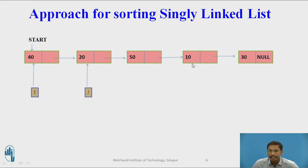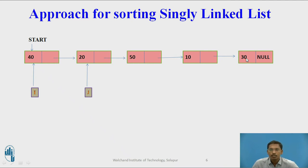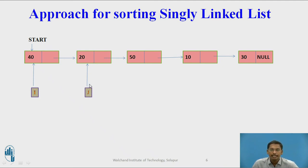This is an example. Suppose we have a singly linked list like this: 40 is the first node and start is pointing to node 40. 40's next pointer is pointing to node 20, 20's next pointer is pointing to node 50, 50's next pointer is pointing to node 10, 10's next pointer is pointing to node 30. 30 is the last node, so its next pointer stores null. I am using two pointers i and j for traversal, where i and j data type will be a structure node pointer. i will be my outer loop and j will be my inner loop. I will compare the value of i with value of all j's. j will traverse from 20 to the last node, and swapping is done if the value at i is greater than the value at j.